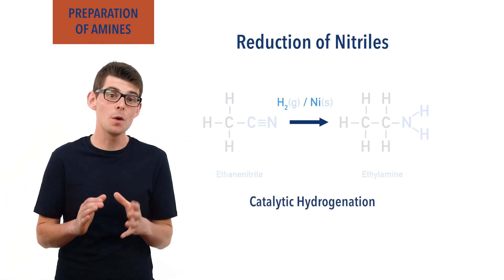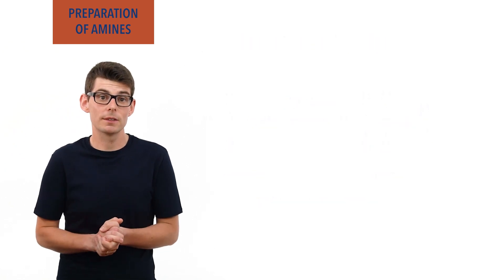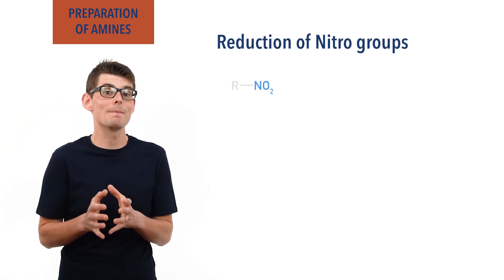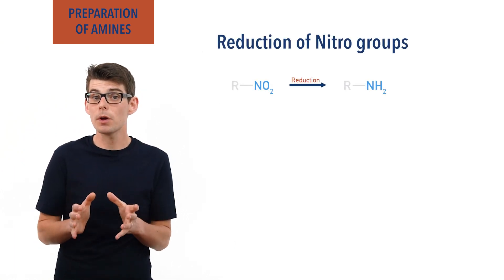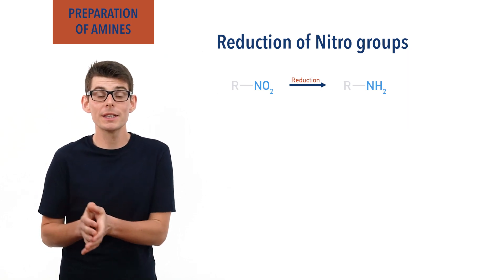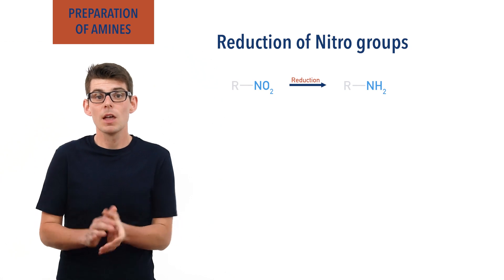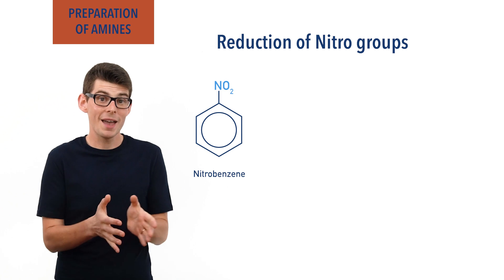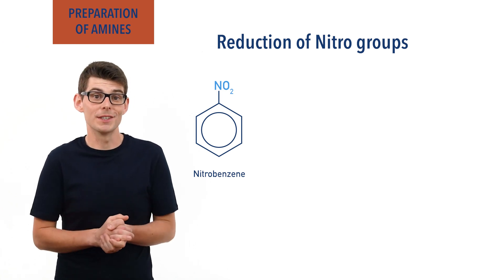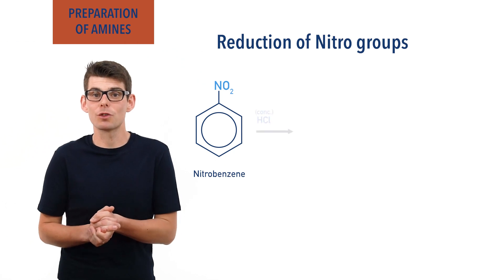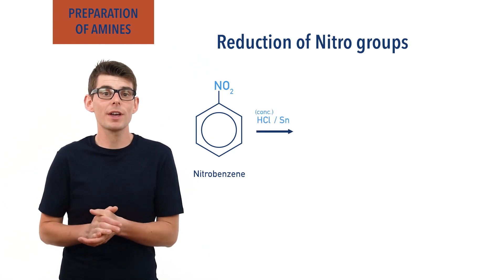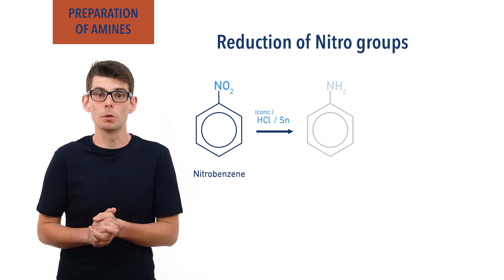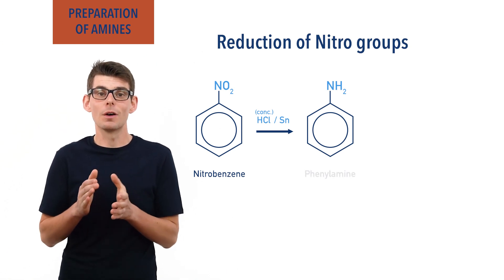Nitriles aren't the only group that can be reduced to form amines. Nitro groups from aromatic compounds can also be reduced to form aromatic amines — a useful process as aromatic amines are often required in the manufacturing of dyes. For example, nitrobenzene is made up of a benzene ring with a nitro NO2 group bonded to one of the carbons in the ring. When reacted with concentrated hydrochloric acid and tin, a reduction reaction occurs and the nitro group gets converted into an NH2 group, forming the aromatic amine phenylamine.